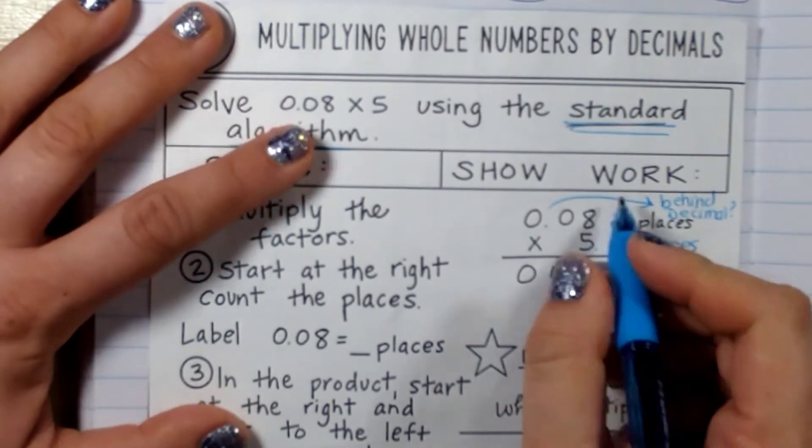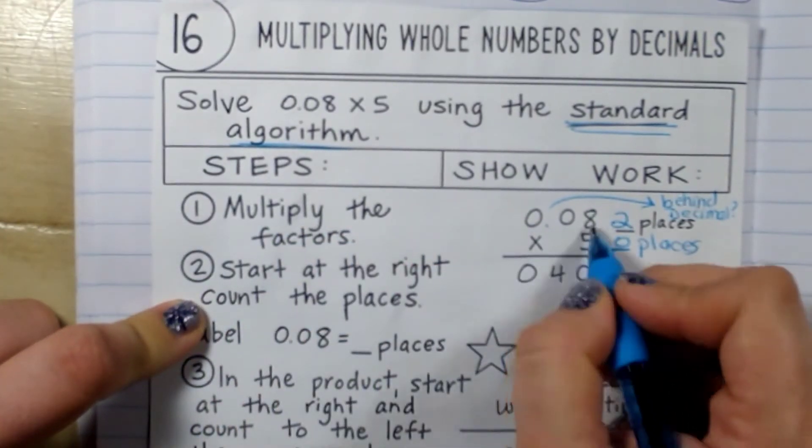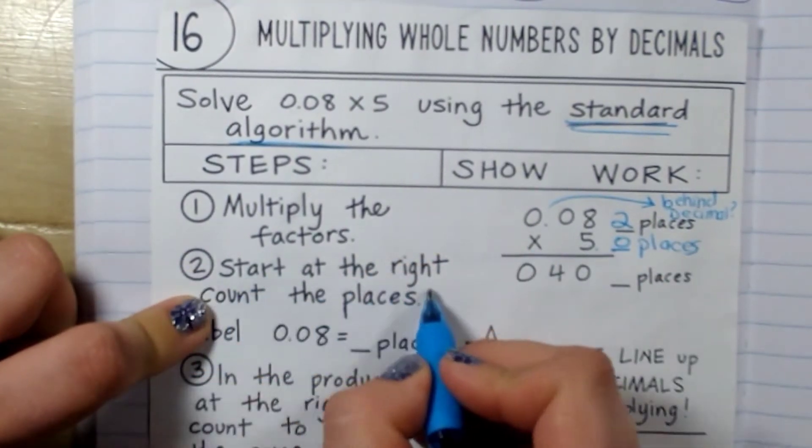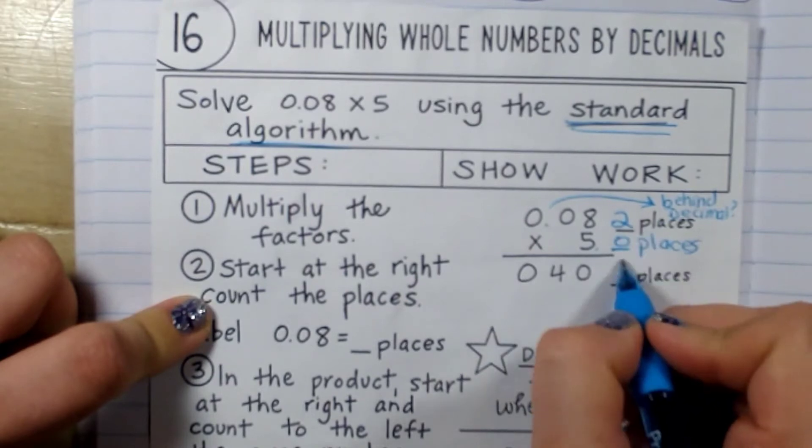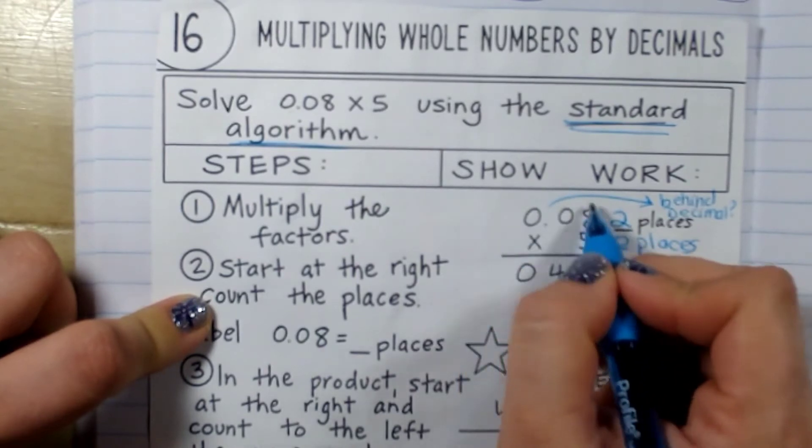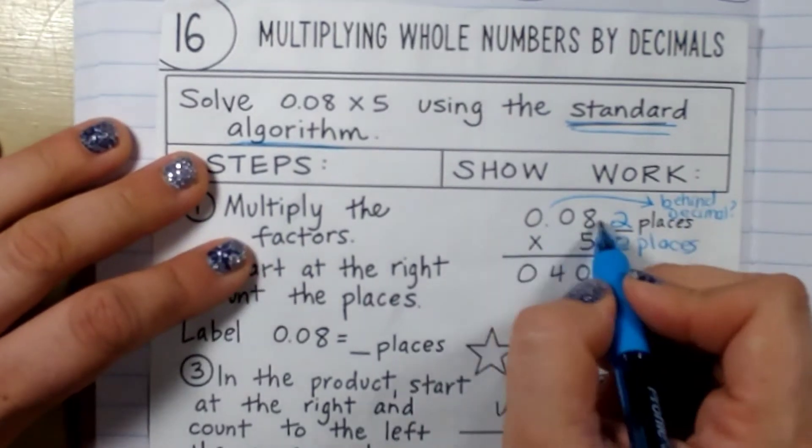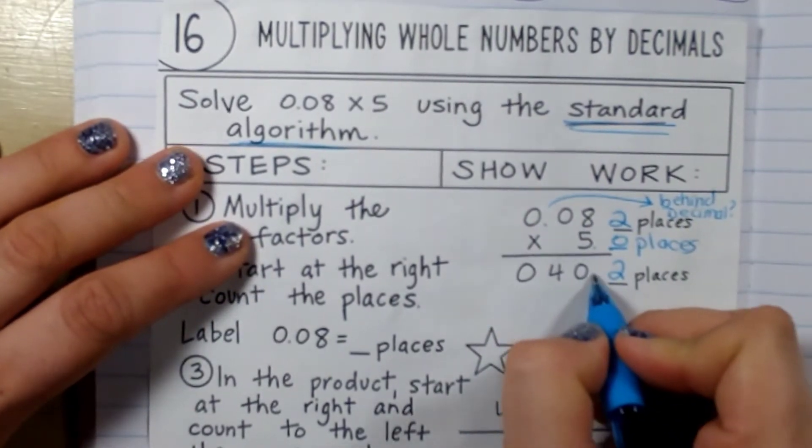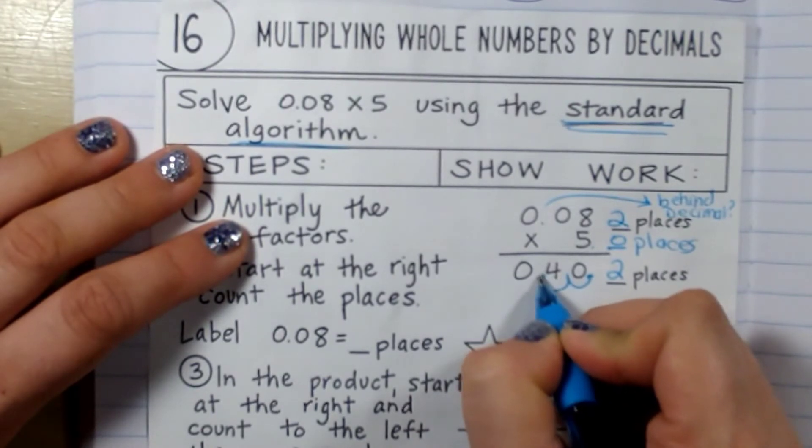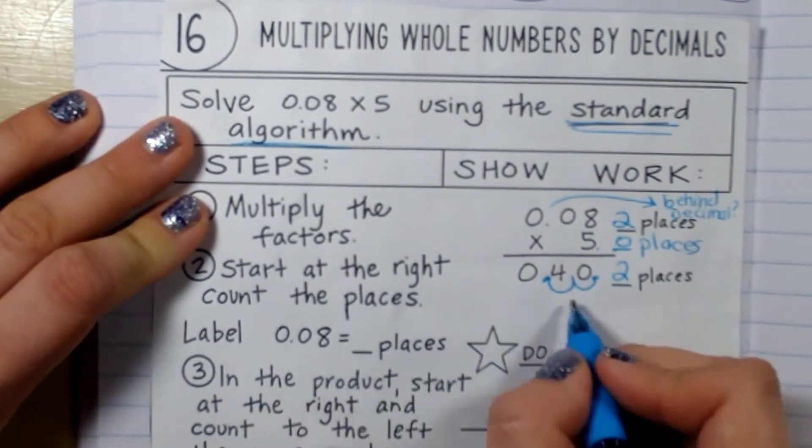So now I'm going to multiply, okay, the factors, which we know 8 times 5 is 40. Now I start at the right and I count the number of place values. So I'm going to add these up here. So you have two place values. Basically, how many place values do you have behind the decimal between the two numbers, which is 2. So now I need to take my decimal point here and move it over to the left two place values. So my answer is 4 tenths.